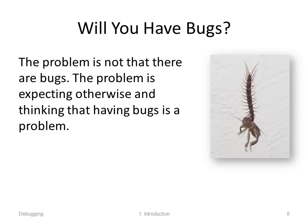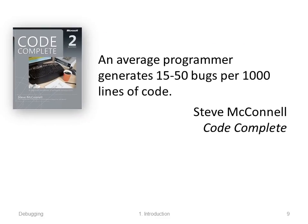Of course you want to keep those bugs to a minimum and fix them when they turn up. Steve McConnell in the book Code Complete estimated that an average programmer generates 15 to 50 bugs per thousand lines of code. Each of those bugs could hold you up a long time when you're trying to get rid of them. Notice there's a big difference in programmers — those that make 15 bugs per thousand lines of code are probably much more in demand than those that generate 50. So we want to get that number as small as possible, though we'll never totally get it to zero.